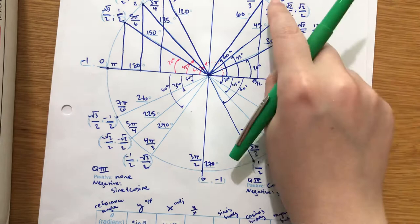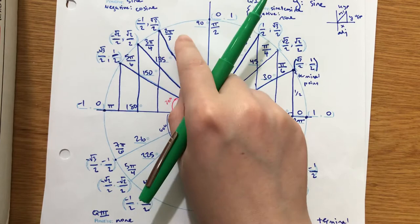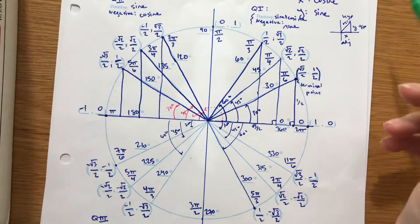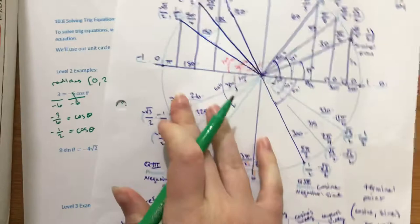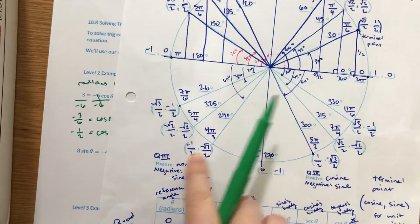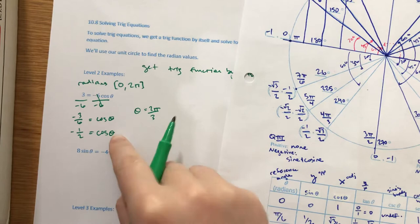Cosine is negative one-half. Remember, cosine is the x-value and sine is the y. So when is your x-value negative one-half? I know it's going to be at pi over 3 values and we need negative one-half. Pi over 3 is positive one-half — no. 2 pi over 3 gives negative one-half — great, so that's one: theta equals 2 pi over 3. There should always be two answers, since there are two quadrants where things are negative. And 4 pi over 3 also has negative one-half, so 2 pi over 3 and 4 pi over 3.